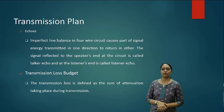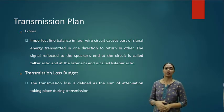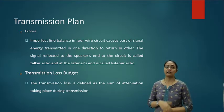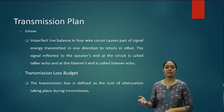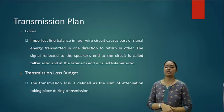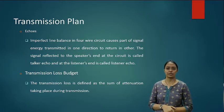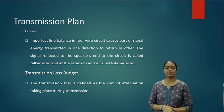The next element included in the transmission plan is ECOS. In ECOS, imperfect line balance in a four-wire circuit causes part of the signal energy transmitted in one direction to return in another. The signal reflected to the speaker's end is called talker echo, and at the listener's end it is called listener's echo. Transmission loss is defined as the sum of attenuation taking place during transmission — that is the transmission loss budget.